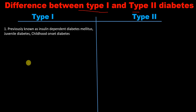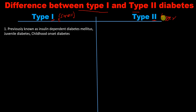First, I want to talk about these numbers. Type 1 is a small number, written as 'I'. Type 2 is a bigger number than 1, written as 'II' (double I). These numbers will hint at many of the differences between type 1 and type 2 diabetes mellitus.